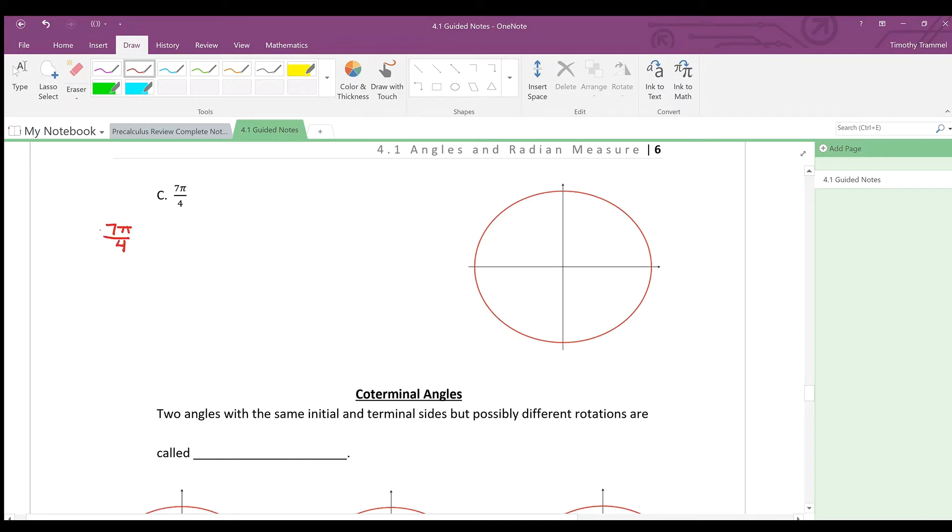Okay, so now that you've given it a try, let's use the same technique that we used in the past. We're going to take this 7π over 4 and just figure out what fraction it is of a full revolution. And so if you simplify this, we're going to get 7 eighths of a revolution.